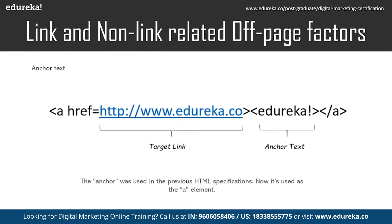Anchor text is also used for creating off-page links. Anchor text is the visible and clickable text in a hyperlink — often blue and underlined — found in articles when linking to another web page. Search engines use anchor text to reflect how your audience views your website. The anchor element was used in previous HTML specifications and can also be seen in blogs, where topics listed at the beginning link to the position where that topic starts. These are called anchor tags, and links help you navigate to another web page or site.